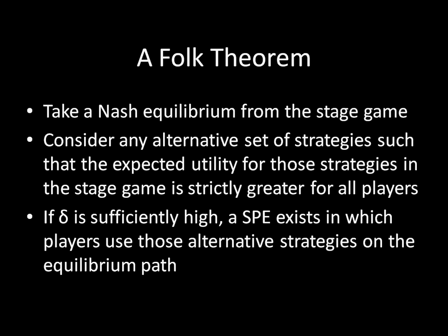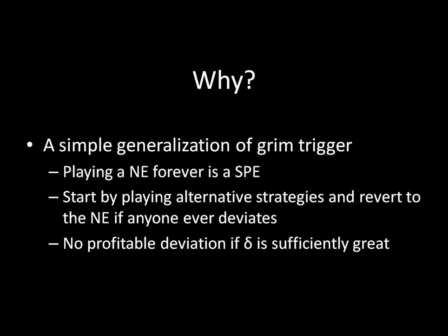So rather than play the Nash Equilibrium, they play whatever set of strategies you came up with, as long as those strategies generate a strictly greater payoff for all players involved. The why is pretty simple if you understand what was going on with Grim Trigger — it's a simple generalization of Grim Trigger. The punishment stage of the equilibrium we can construct is for the individuals to play the Nash Equilibrium forever. If anyone ever breaks the agreement to play the alternative strategies, we shift to playing the Nash Equilibrium forever. And we know that Nash Equilibria played in every single stage is a subgame perfect equilibrium, so the threat to revert to that is, in fact, credible.